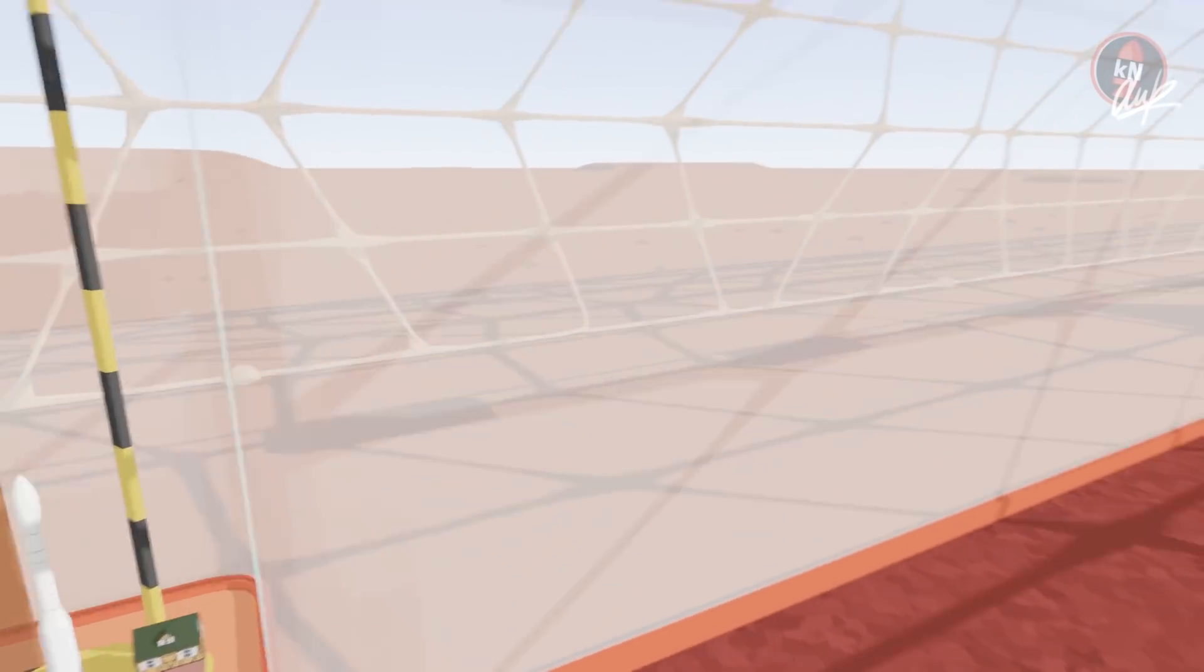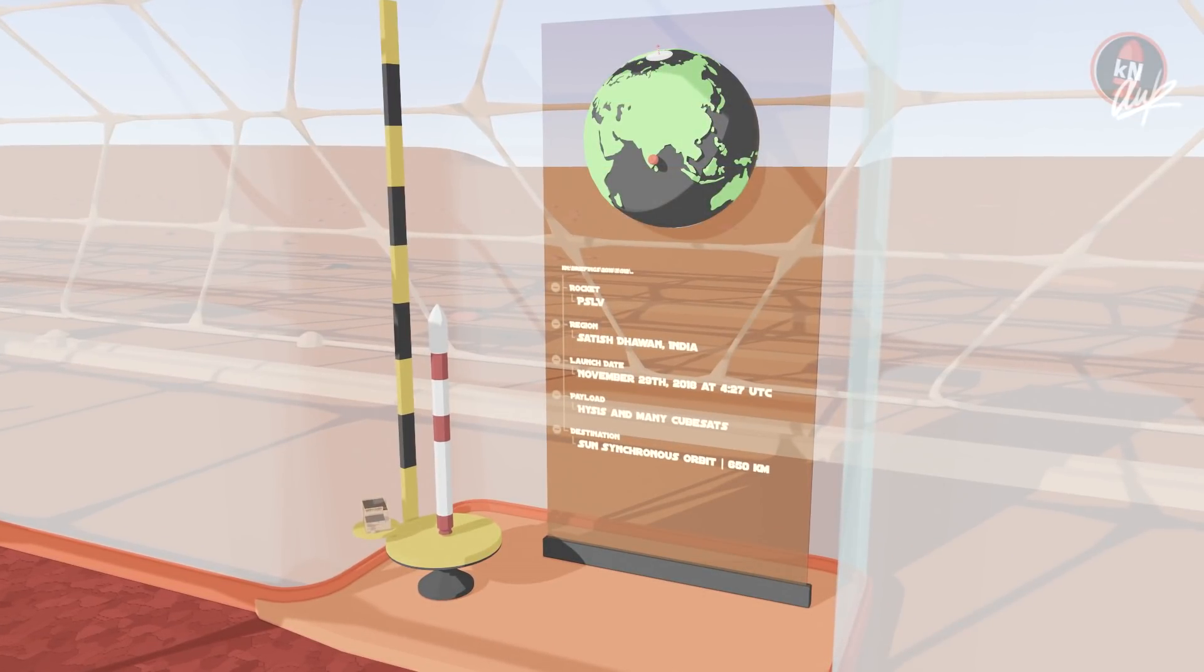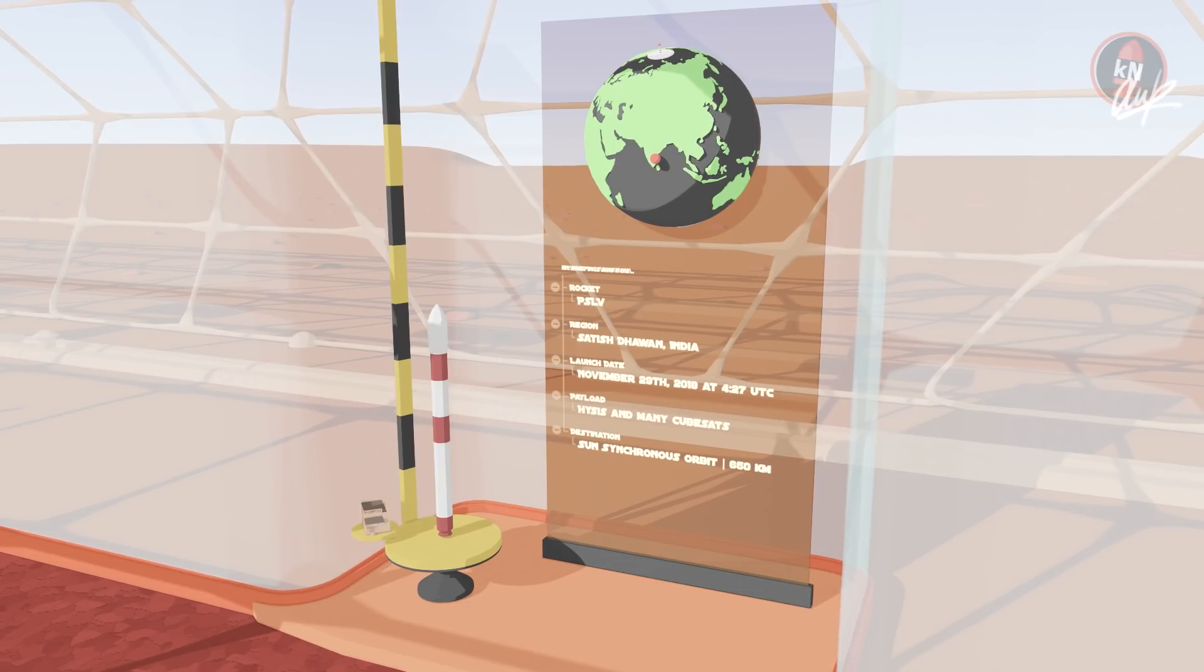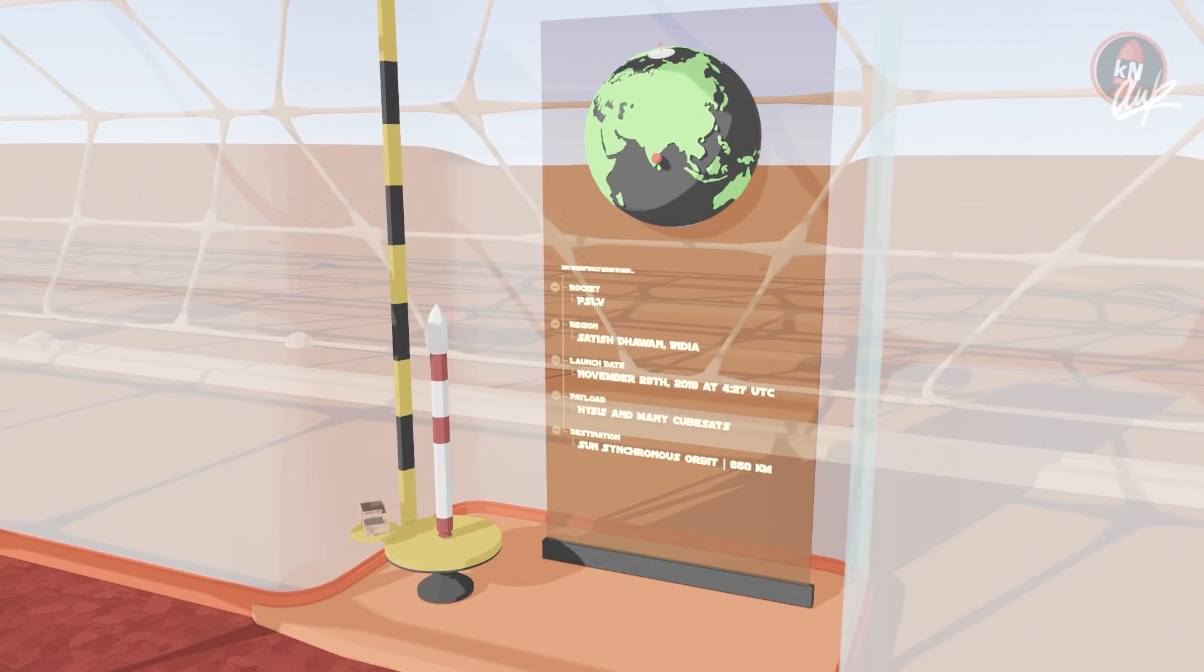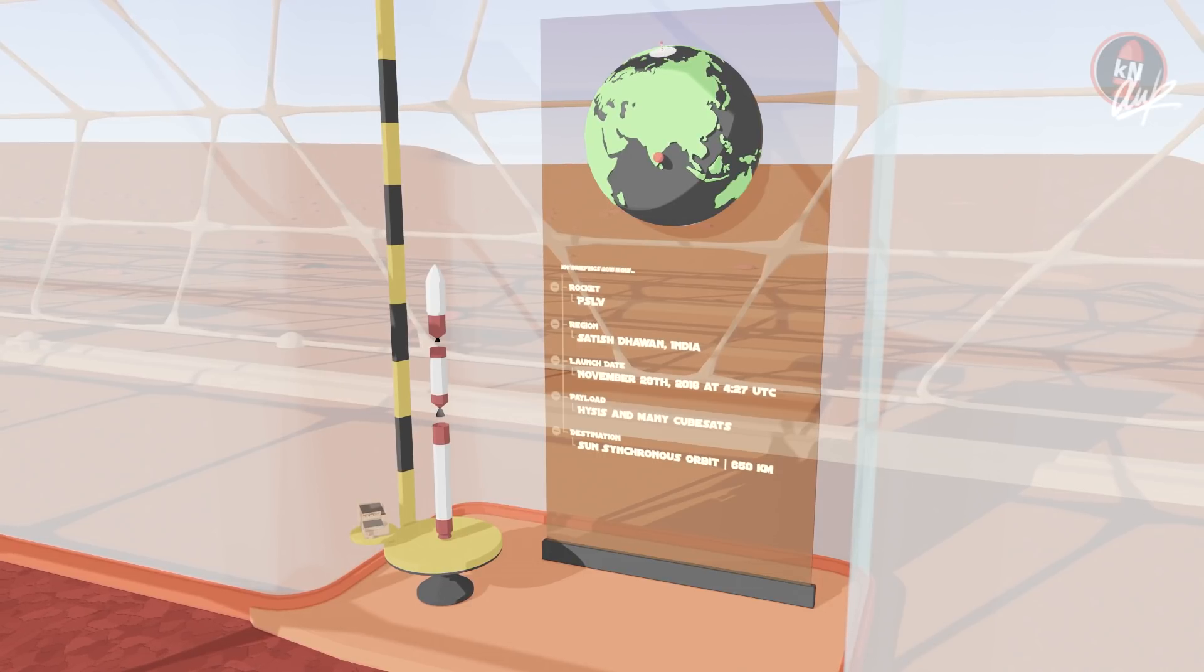The second to last rocket to launch in November 2018 was an Indian PSLV on November 29th from Satish Dharan. The main payload was HISIS, the Hyperspectral Imaging Satellite which will circle Earth on a 630 km high solar synchronous orbit.